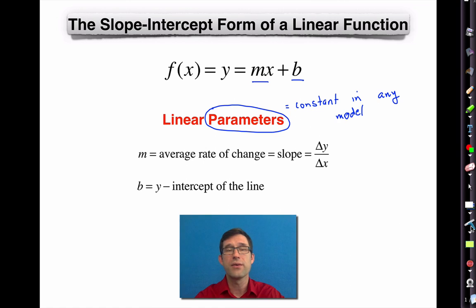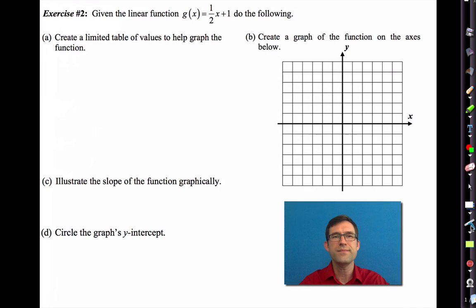All right. So the slope-intercept form of a linear function, f of x equals y. f of x always equals y. And that's equal to mx plus b. Linear parameters. This is kind of a cool word, a parameter. A parameter is a constant in any model. Because there's constants and there's variables. x and y, they're variables.